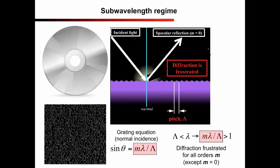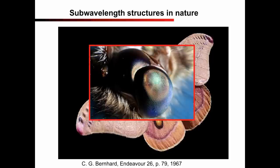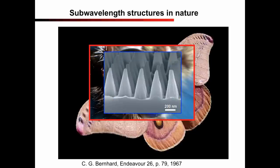Today, subwavelength structures are widely used in optics, for example in polarization or anti-reflection optics. Mother Nature has also perfectly mastered the technology. Some night flying moths have eyes with cornea covered with a subwavelength array of microscopic pyramids, which act as an anti-reflection coating.